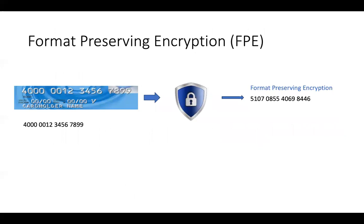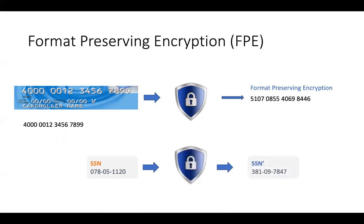So they proposed a solution. They called it data type preserving encryption; today we call it format-preserving encryption more commonly. What it does is take a number like a 16-digit credit card and convert it to an encrypted value — another 16-digit number. And once you have format-preserving encryption, you can apply it not just to credit card numbers but to other PII data types such as social security numbers.